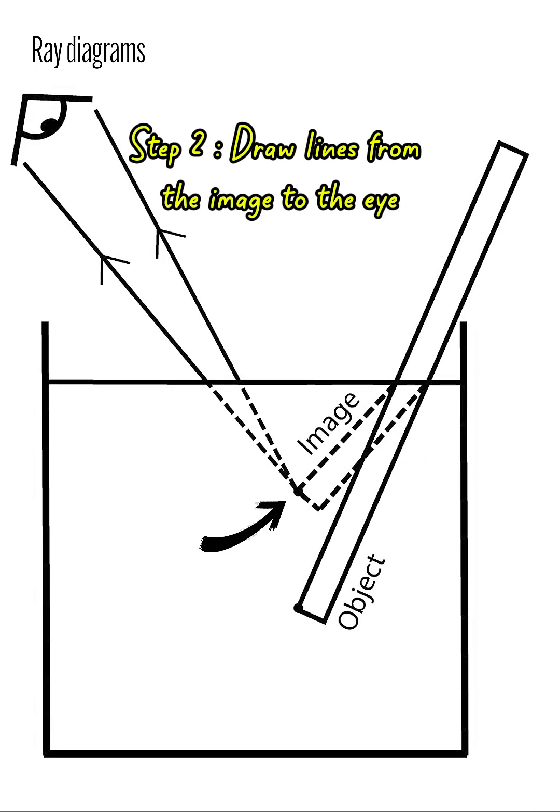Second, we will draw light rays from the image to the observer's eye. Please indicate correctly which lines are dotted and which are solid.